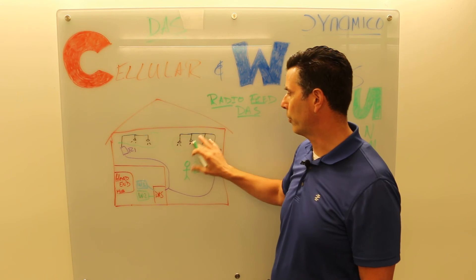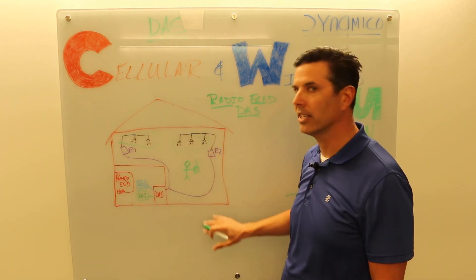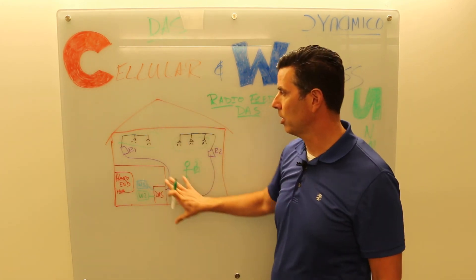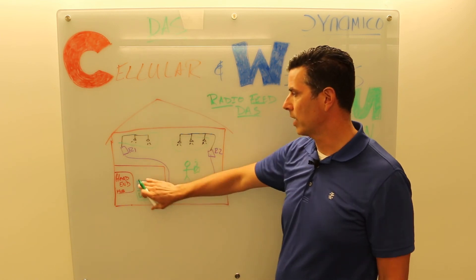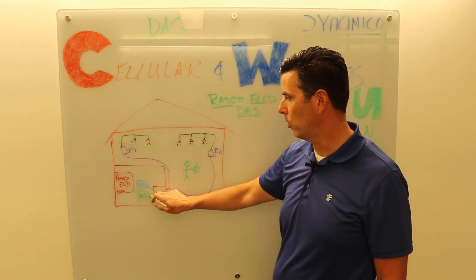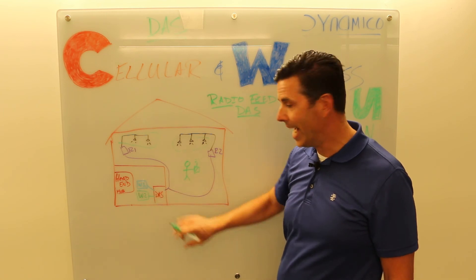So again, this is very basic: you've got a head end or a hub, you've got carrier radios, wireless operator one, wireless operator two, they feed the DAS.